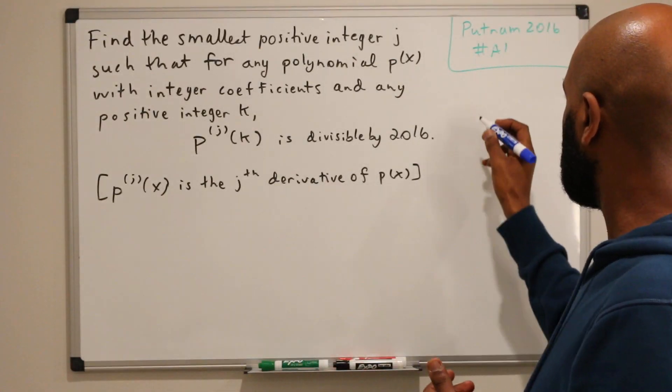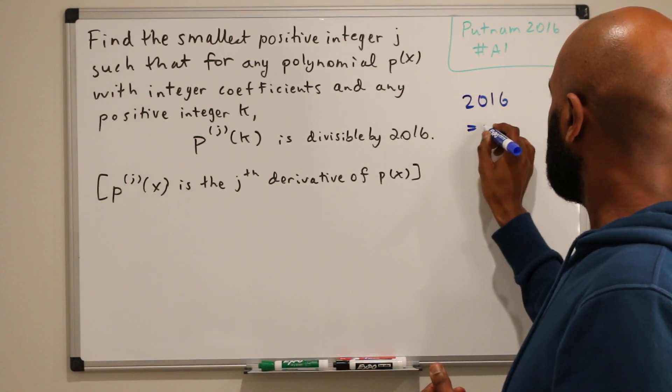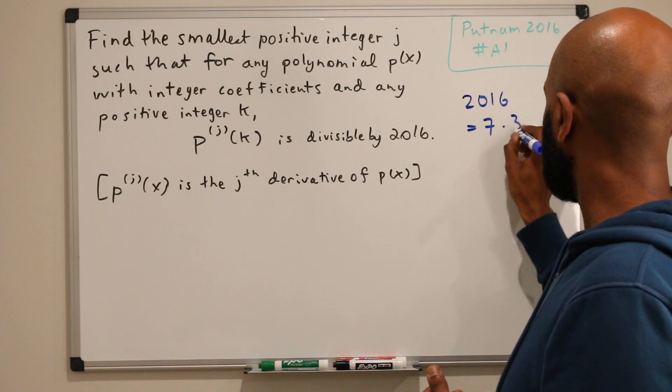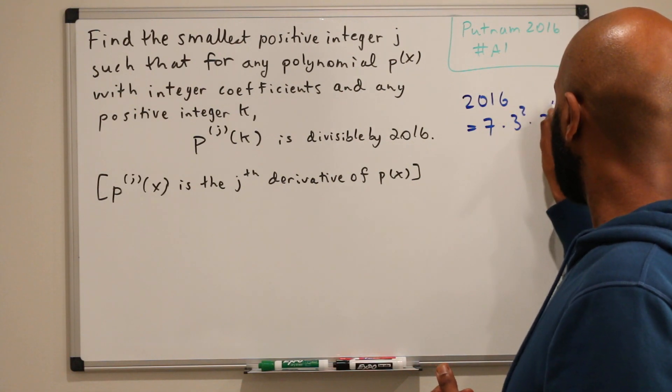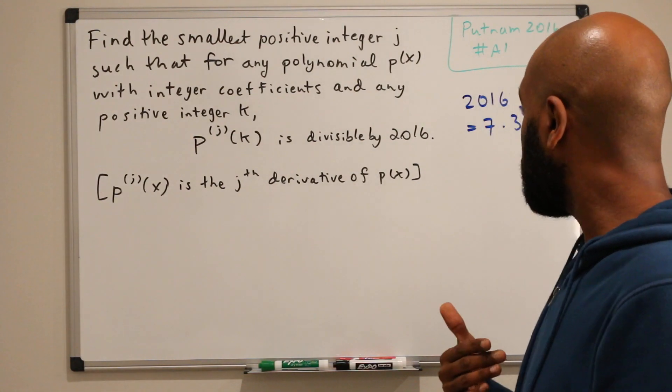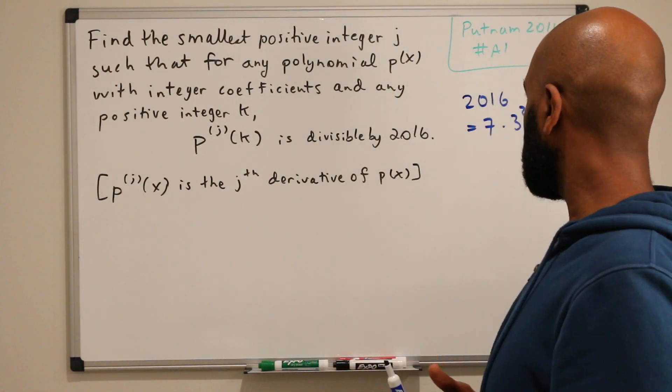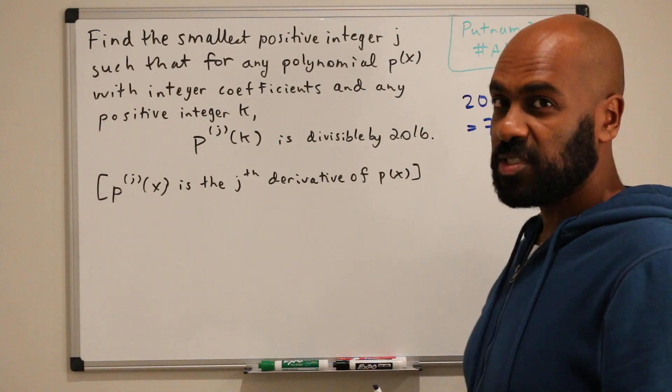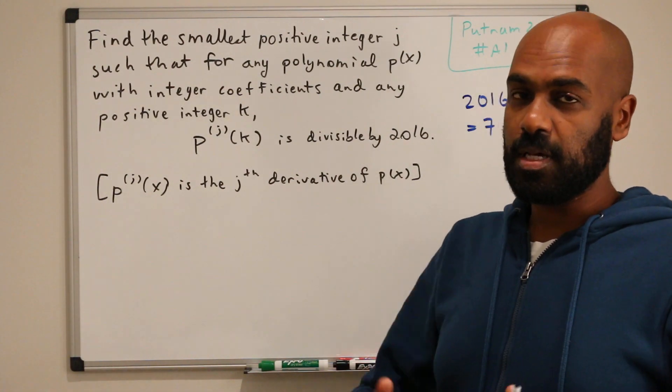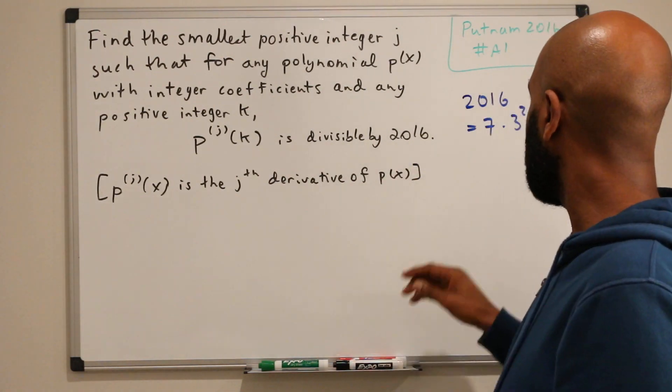So we're considering divisibility by 2016, so we should know the prime factorization of 2016. I'm going to write it over here. It's 7 times 3 squared times 2 to the 5th, and one thing to know is I've noticed that it seems in each year the prime factorization of the year comes up in handy in some way on the Putnam competition.